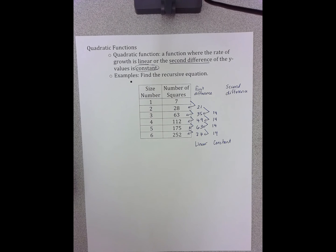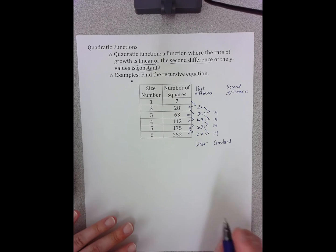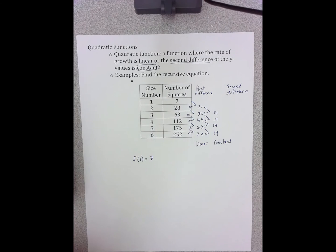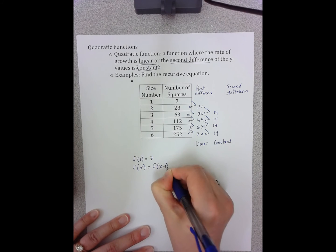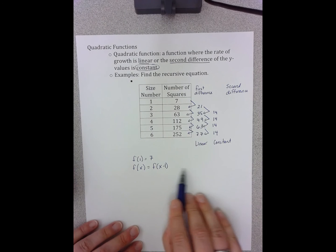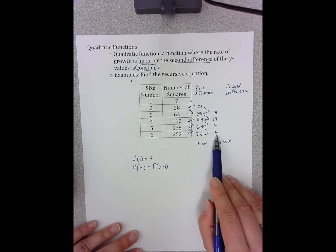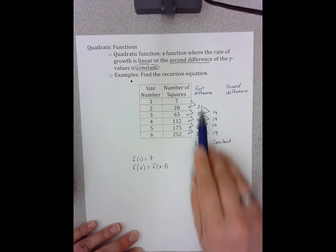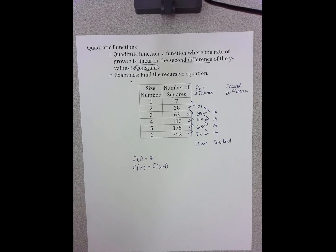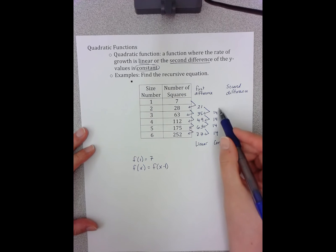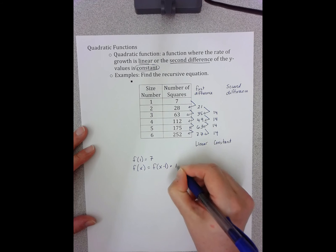Now I need to write the recursive equation. Remember, the recursive talks about what I'm doing from one term to get the next. The first part is that we always write our initial term: f of 1 equals 7. The second part is f of x equals the previous term, f of x minus 1, and then I need to tell what I'm doing each time. I'm not adding 14 each time — that would be this first difference column. I'm actually adding a linear equation, a y equals mx plus b portion. The second difference, which is constant, is my slope, so I can already write plus 14x.